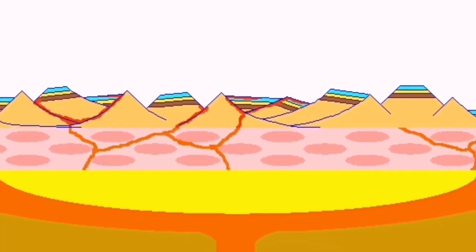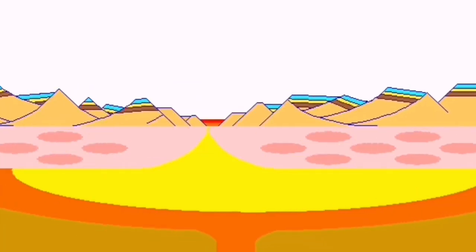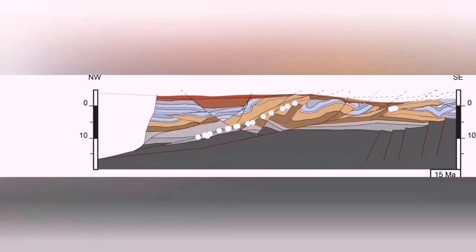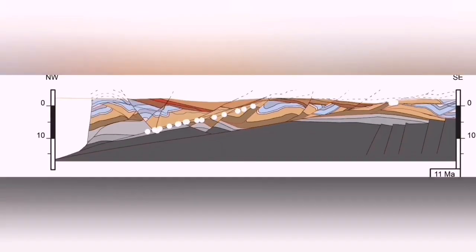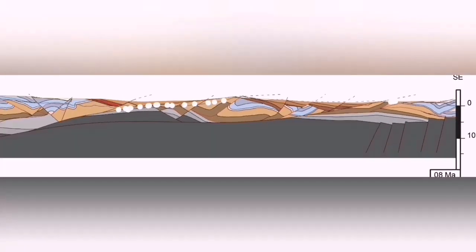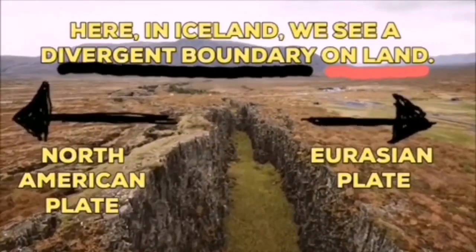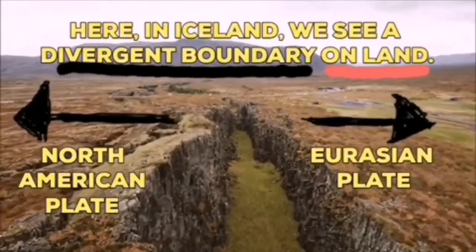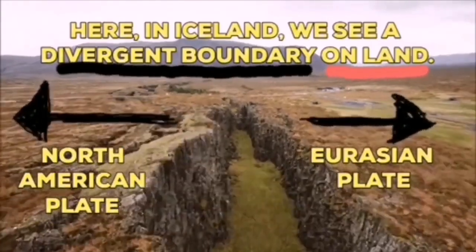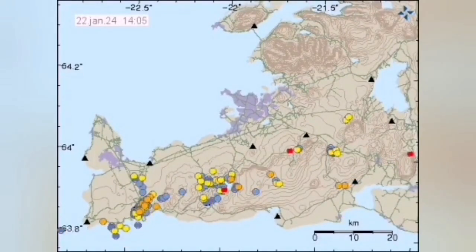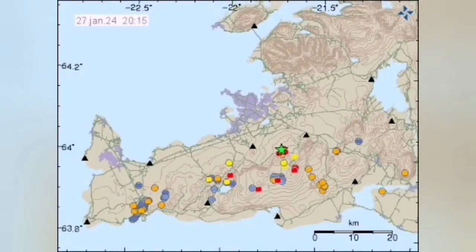As the pressure is relieved, the mantle starts to melt, changing from solid to liquid phase. This liquid can erupt through cracks and fault lines, creating volcanism. This stretching movement of the earth's crust extends across the region, creating a series of volcanic systems — like pulling apart a large piece of sausages.